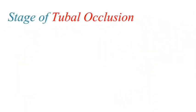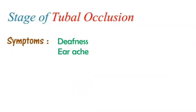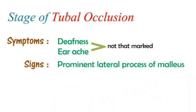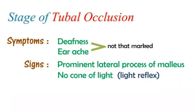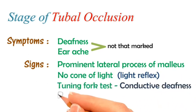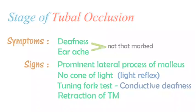In the stage of tubal occlusion, the patient may present with deafness and earache which may not be very prominent. The lateral process of malleus appears prominent with distorted or absent cone of light. Tuning fork tests reveal conductive hearing loss and retraction of the tympanic membrane may be observed.